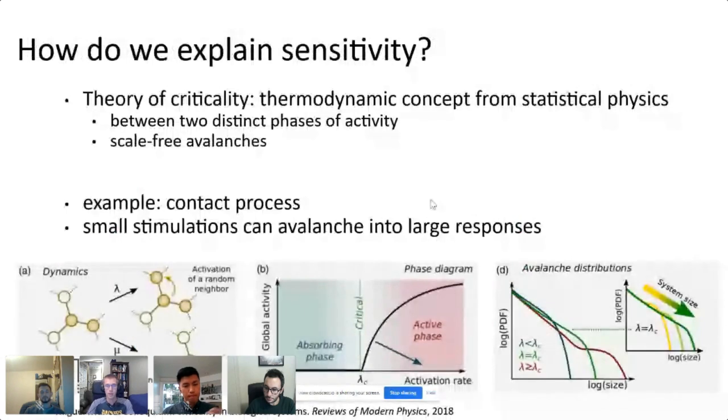That becomes a theoretical question: how do we explain the sensitivity in biological networks? One theory is the theory of criticality. It's a concept from thermodynamics and statistical physics. The big takeaway from this theory is when you're between two distinct phases of activity, when you're poised right between those two phases, then you see scale-free patterns of activity called avalanches. A quick example from a colloquium given by Miguel Munoz: if you have a contact process with a graph with active and inactive nodes, then activity spreads with a rate of lambda and activity dies out with a rate of mu.